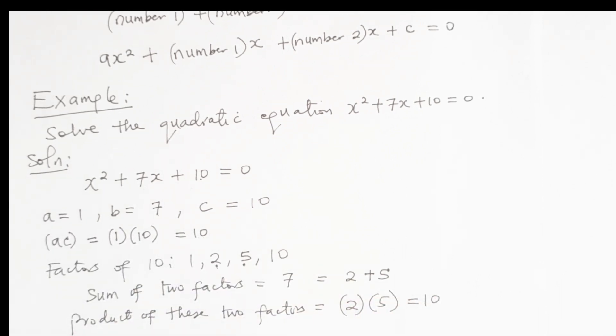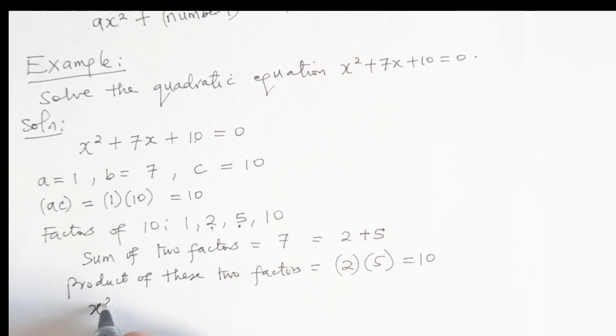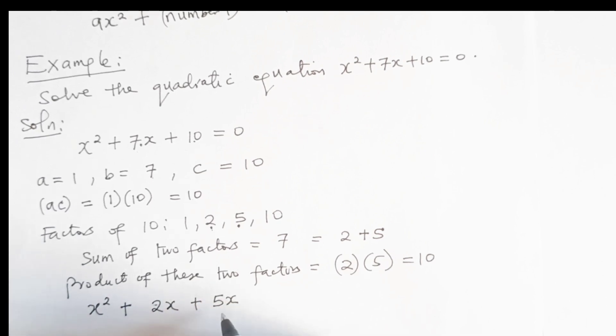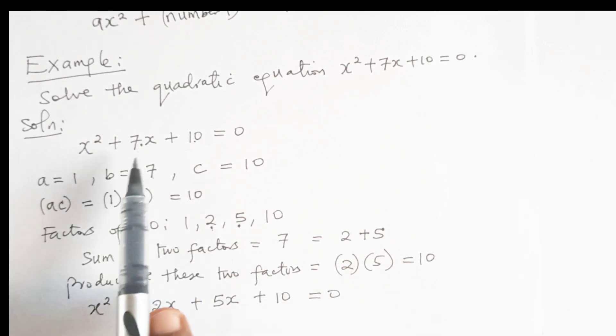Now we will split the middle term in the equation. We will have x squared plus, now instead of writing 7x, I'm going to write 2x plus 5x plus 10 equal to 0. So I've changed the middle term and written it as a sum of the two factors, 2 and 5.